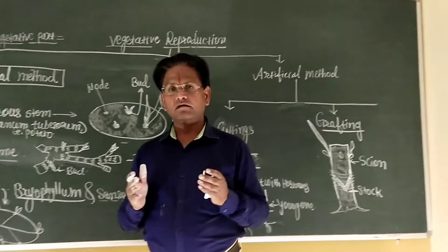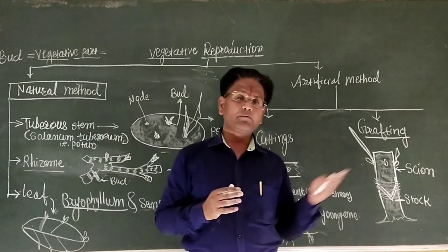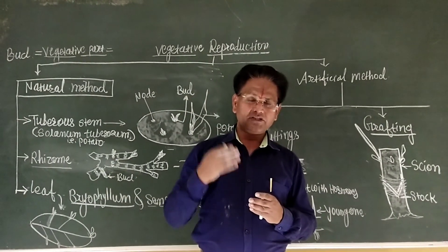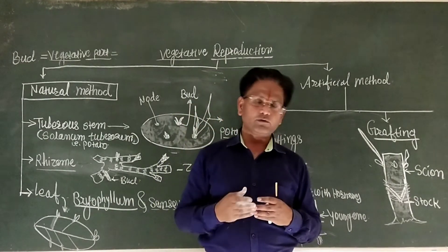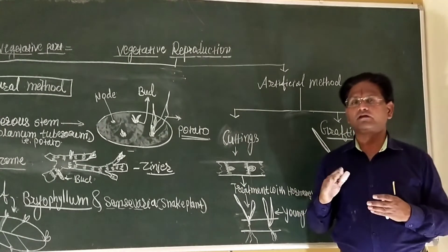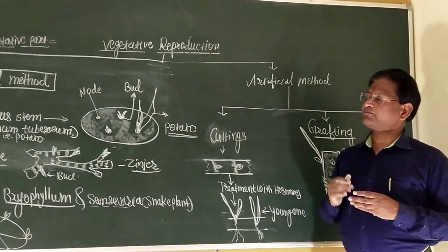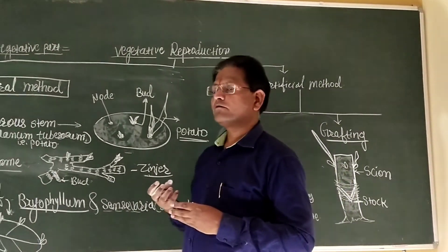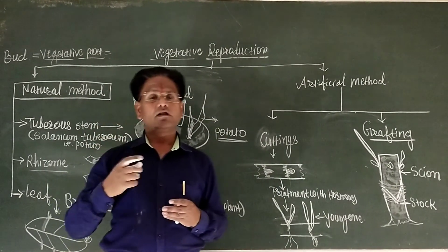The grafting process is generally carried out in horticulture and floriculture. This method of vegetative propagation is very important because within a short period of time, the number of individuals in the population can be multiplied very fast.